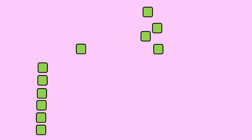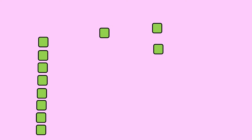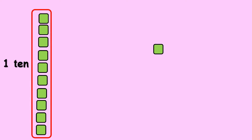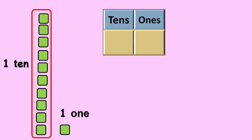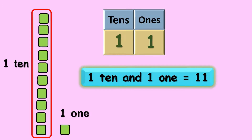7 8 9 10. So children, 10 ones will give you 1 ten, and the remaining 1 is 1 one. So how will you write in tens and ones? 1 ten and 1 one gives you 11.